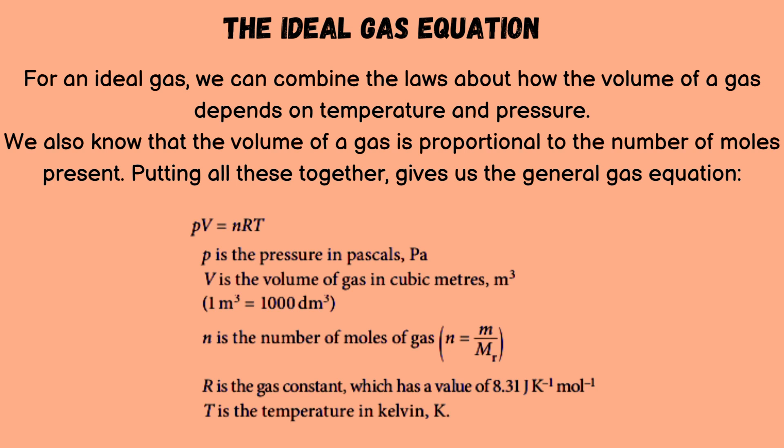N is the number of moles of gas, where n = m / M_r. R is the gas constant, which has a value of 8.31 joules per kelvin per mole. T is the temperature in kelvin (K).